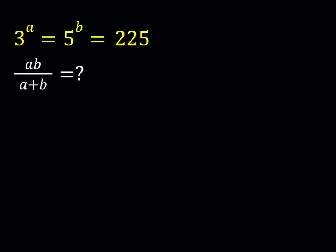Hello everyone. In this video we're going to be solving an exponential system. We have 3 to the power a equals 5 to the power b equals 225, and we are supposed to evaluate the expression ab over a plus b.